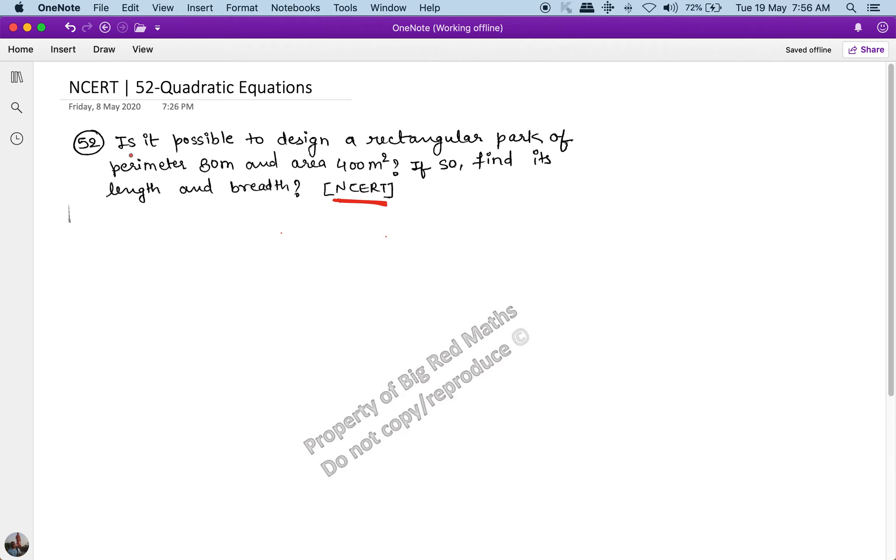Is it possible to design a rectangular park of perimeter 80 meter and area 400 meter square? If so, find its length and breadth.